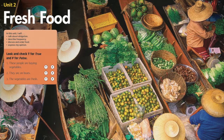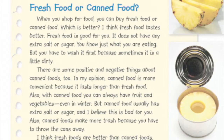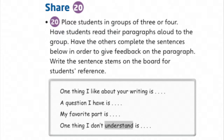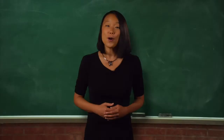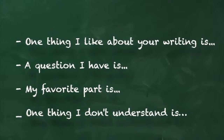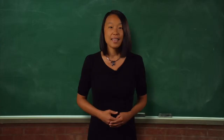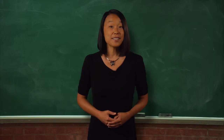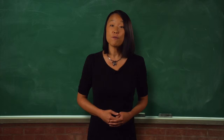For example, in the unit on fresh food in level 4, students write an opinion paragraph on food from supermarkets and food from local farms. The lesson planner suggests a small group activity in which students give feedback on each other's paragraph. The teacher writes sentence starters on the board to help them give useful feedback: 'One thing I like about your writing is...', 'A question I have is...', 'My favorite part is...', 'One thing I don't understand is...' This type of guided peer assessment can help students improve their writing before turning their paper in for a formal assessment.